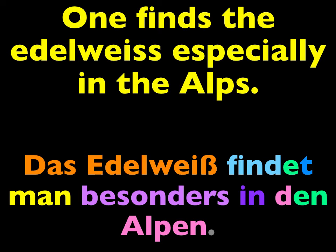Notice something else: the English says 'one finds the Edelweiß', and yet in German I said 'das Edelweiß findet man'. In German, it's absolutely fine to put the direct object first, followed by the verb and the subject. I could have said 'man findet das Edelweiß', but I chose to say 'das Edelweiß findet man' and continue with the sentence. As long as the verb is the second element of the sentence — not the second word, but the second element — then this works perfectly fine.